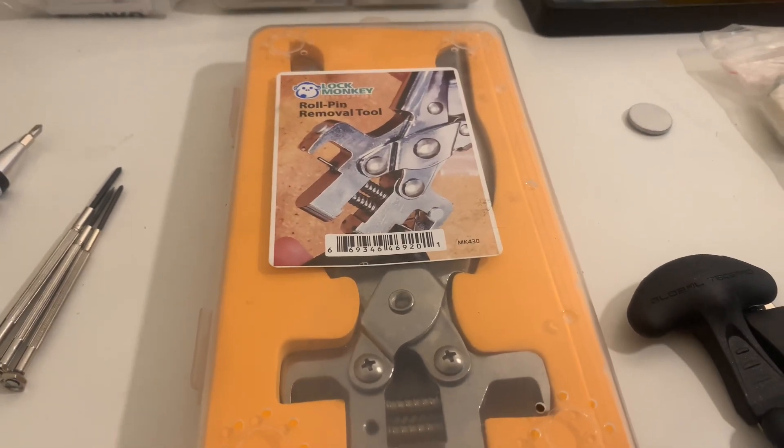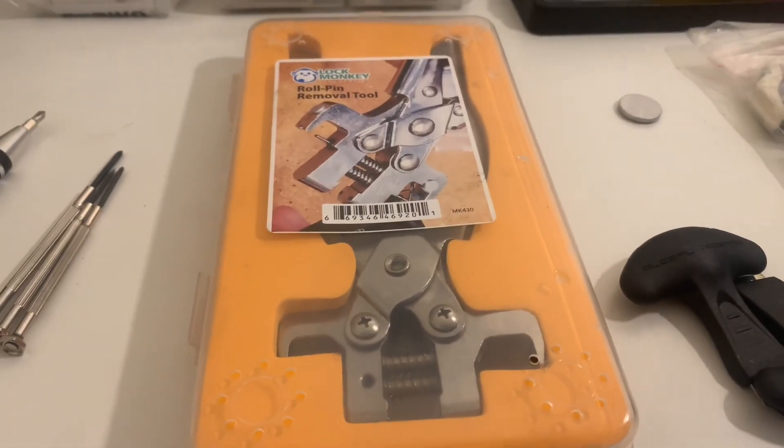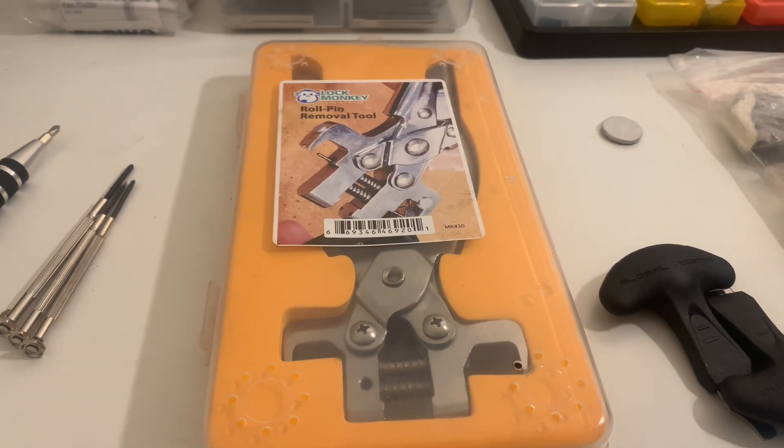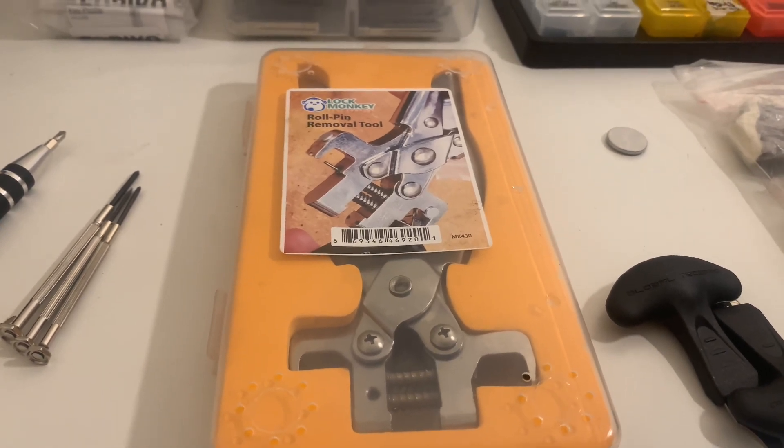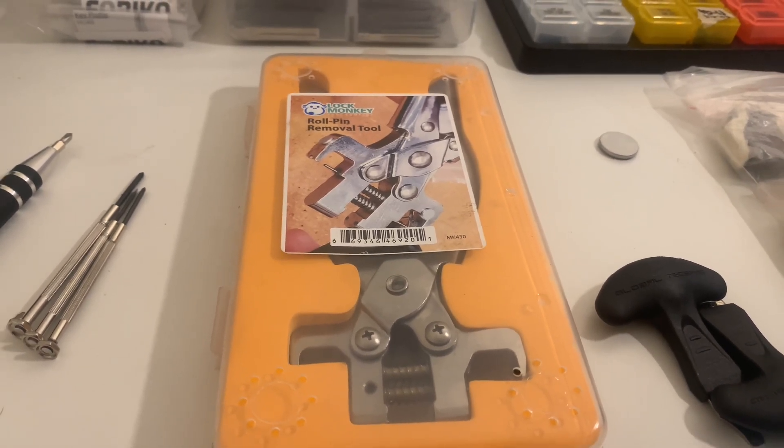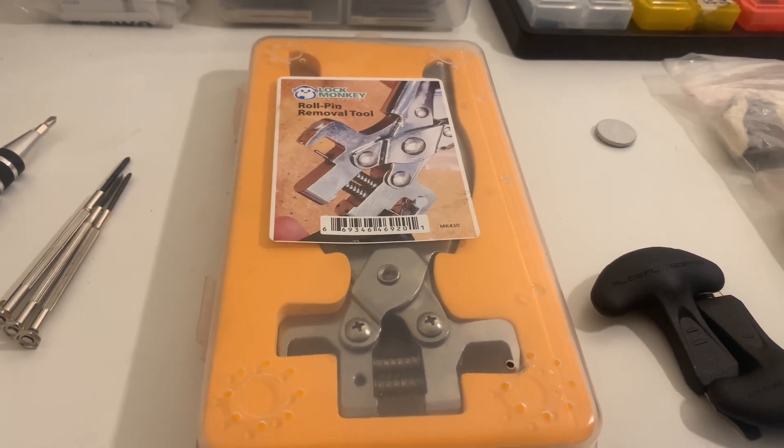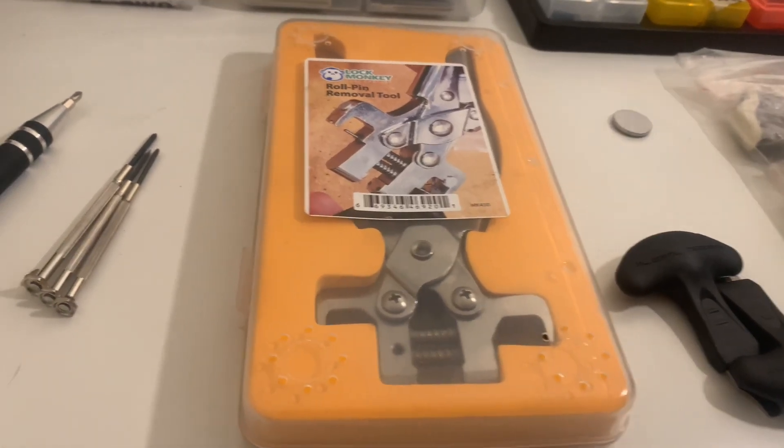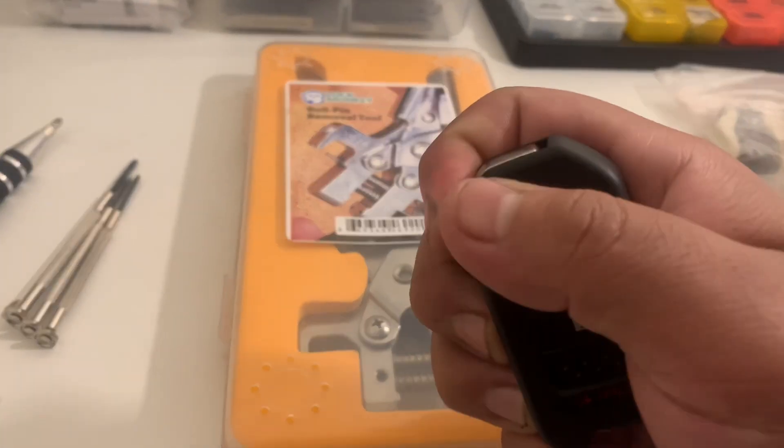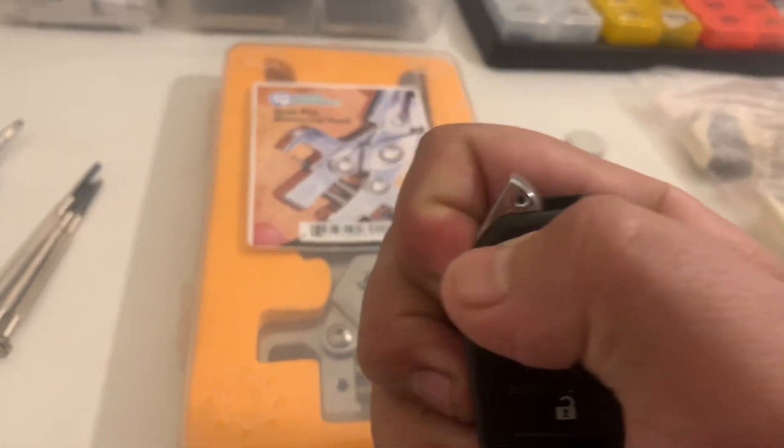This is from Lockmonkey, you're going to need something like this. I believe GTL has their own, Goso Lockpicks has their own. They have their own variations to decide which one's best for you. But this lets you insert that little pin into the X-Horse or KeyDIY remotes.